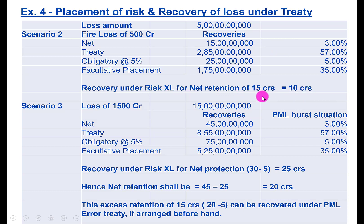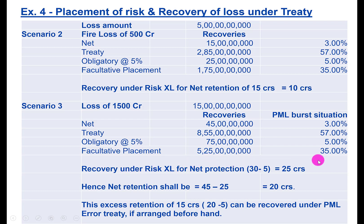In the last scenario, the loss is 1,500 crores, which exceeds the PML of 1,000 crores — this is a case of EML error. Net retention is 3 percent of 1,500, which is 45 crores. Treaty pays 57 percent, which is 855 crores. GIC obligatory pays 75 crores. FACA insurer recovers 525 crores. Risk XL pays the full 25 crores (30 crores minus 5 crore retention), leaving a balance of 20 crores.